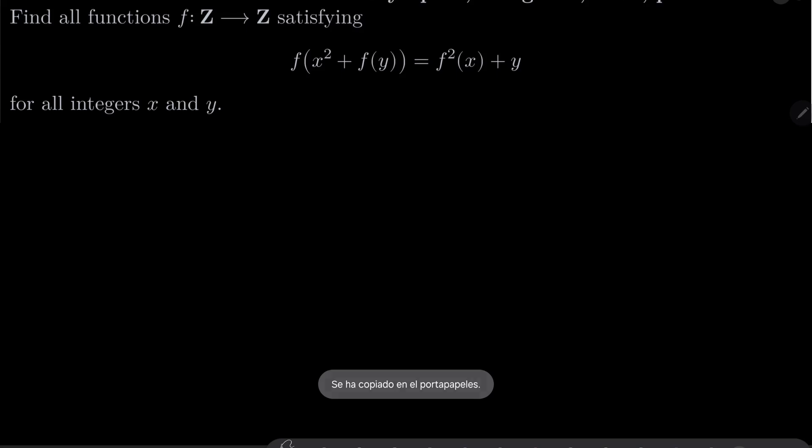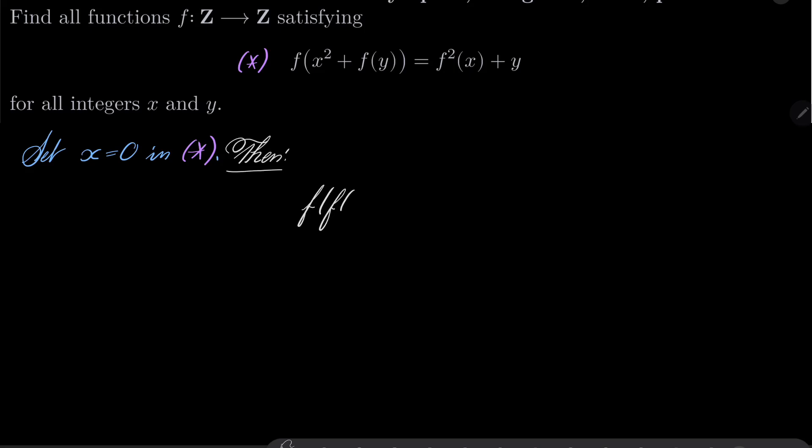First of all, let's call this condition asterisk and let's start with setting x to be 0 in our condition asterisk. What then? Notice that then we have f of f of y equals f squared of 0 plus y. Let's take a look at the right-hand side.